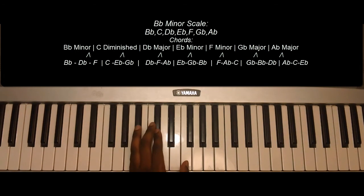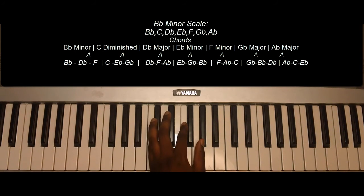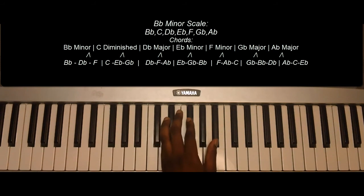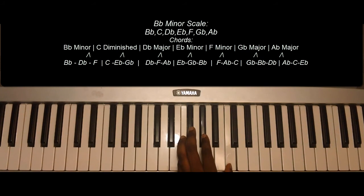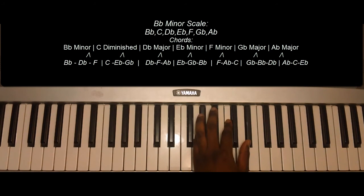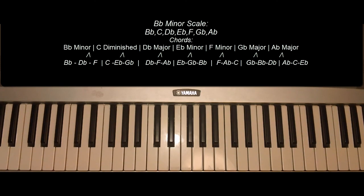So from the top: B-flat minor, C diminished, D-flat major, E-flat minor, F minor, G-flat, A-flat, B-flat. B-flat minor scale.